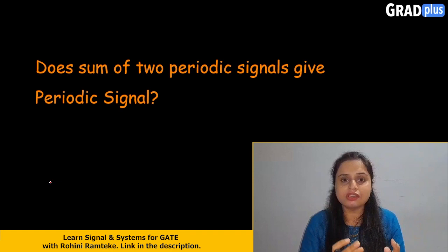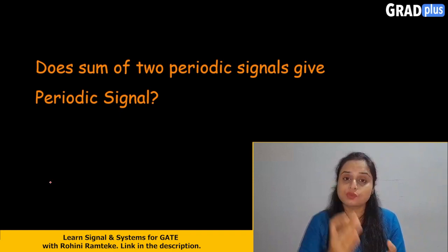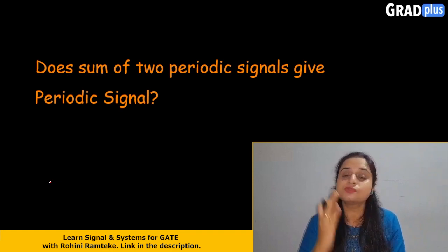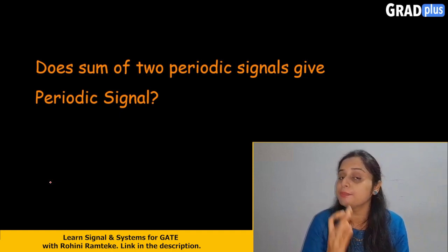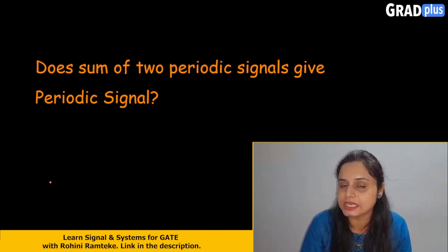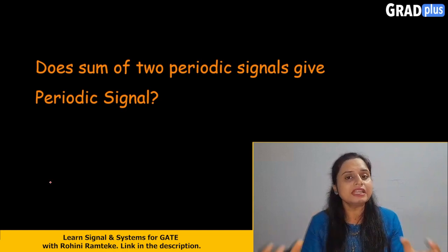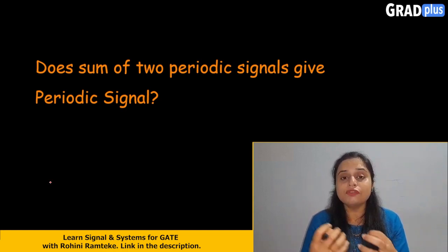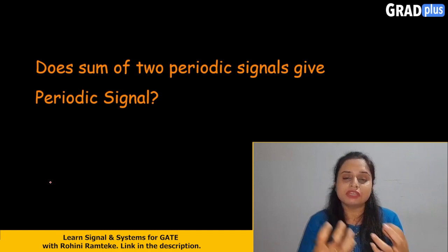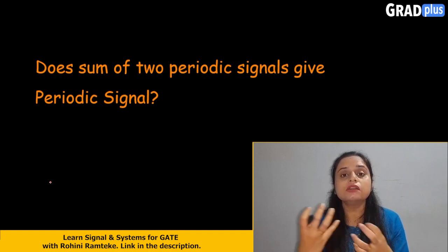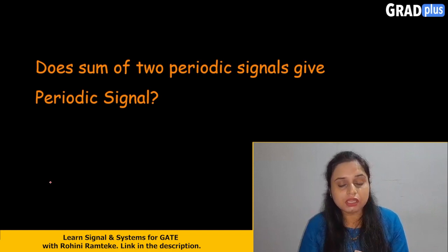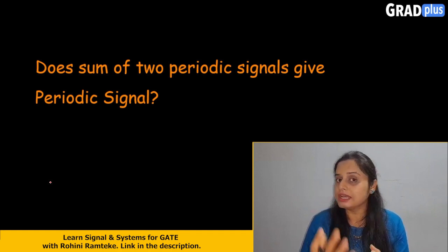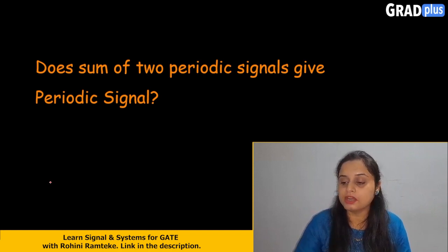Your sinusoidal wave, your cosine wave, square wave, and triangular wave — these signals all come under the periodic signals. So when we add these signals, what will we get? Whether we will get a periodic signal or not — let us find out.